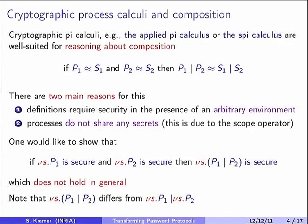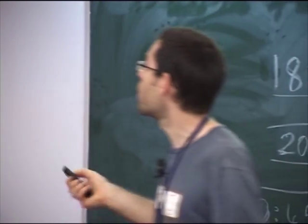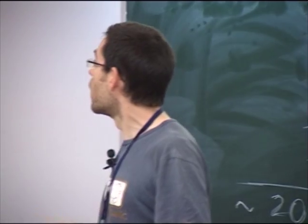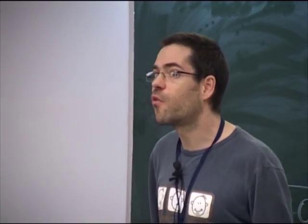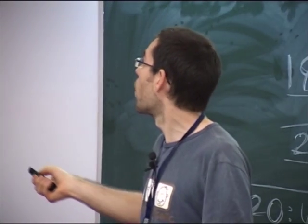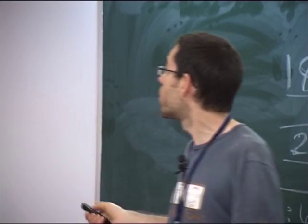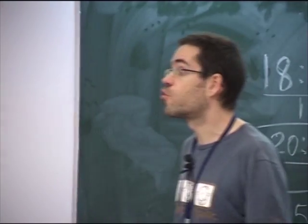It's not a context anymore. So writing new S P1 parallel P2 is different from new S P1 in parallel with new S P2, where I'm referring to two different values. So there's one hidden hypothesis when saying this is compositional: that secrets are not shared.